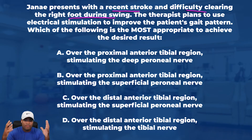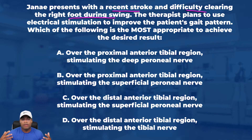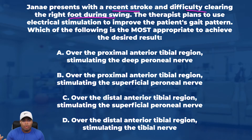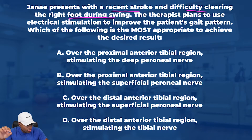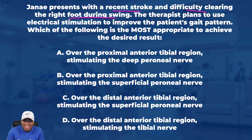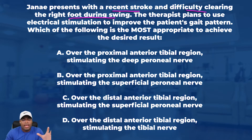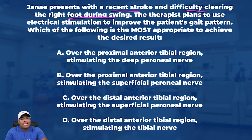We know this is very common in patients with a stroke. MCA stroke is most common, but there's also ACA, PCA, and many other types. Oftentimes patients will have hemiparesis — one side of the body goes flaccid and over time turns into spasticity. One of the major dysfunctions is the inability to clear that foot during swing, and these patients typically fall or trip a lot because of that.